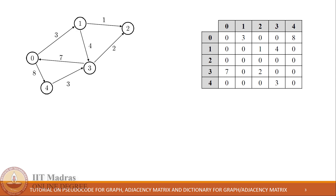Each edge in the graph is represented in the matrix with its label. For example, there is an edge from vertex 0 to 1 — this edge is represented in the matrix in its first row 0 to 1, where it says 3. Similarly, edge 0 to 4 with label 8 is represented in the first row last column, which says there is an edge from 0 to 4 and the label is 8.